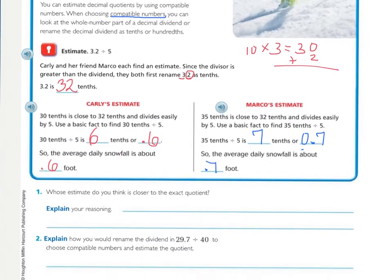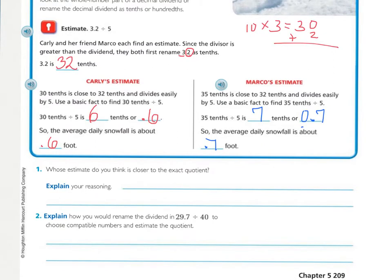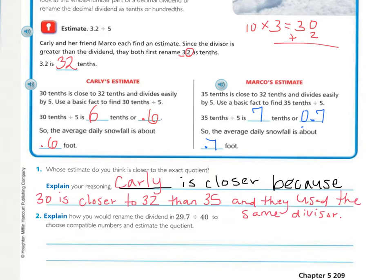For number one, remember that both are considered good estimates, but we're trying to figure out which is closer to the exact quotient. Whose estimate is closer? Your answer should be similar to: Carly is closer because thirty is closer to thirty-two than thirty-five is, and they use the same divisor. Thirty is only two away from thirty-two, while thirty-five is three away.